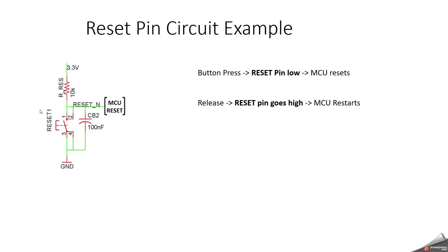Now, looking at the electrical view: the reset pin is usually active low. It internally connects to the MCU reset circuitry, which clears registers, sets peripherals to default, and forces the program counter to the reset vector. It often comes with an internal pull-up resistor so it stays high by default. In a simple circuit example, you have VCC connected through a pull-up resistor to the reset pin, which goes to the MCU, with a push button to ground. When the button is pressed, the reset pin goes low and the MCU resets; when released, the pin goes high and the MCU restarts. In summary, the reset pin is a hardware mechanism to manually restart the MCU via a button, automatically control startup, and support debugging and programming — ensuring the MCU can always be brought back to a known state.